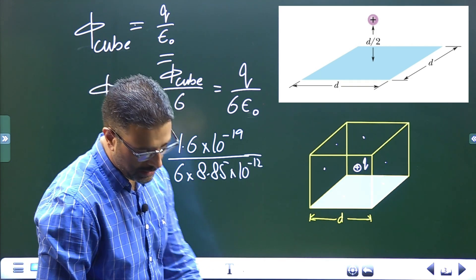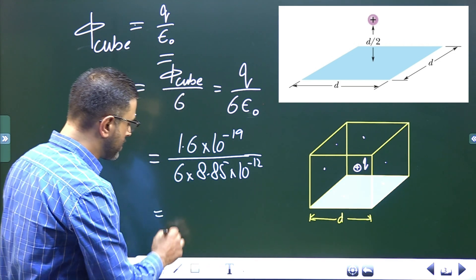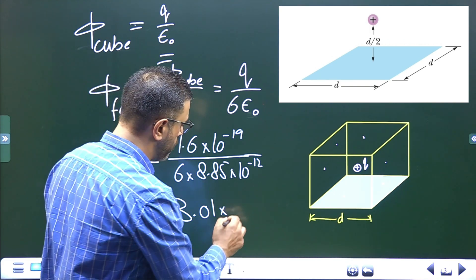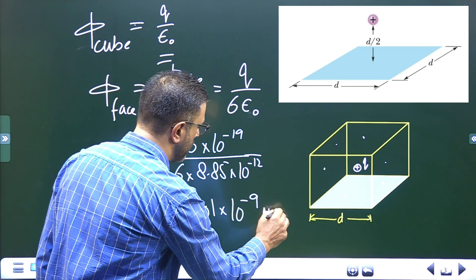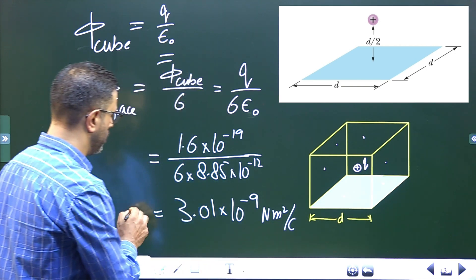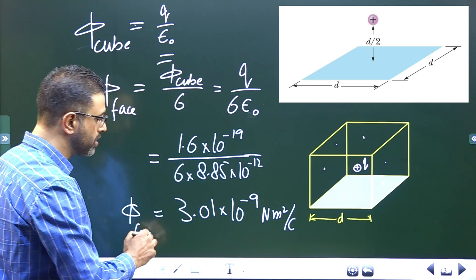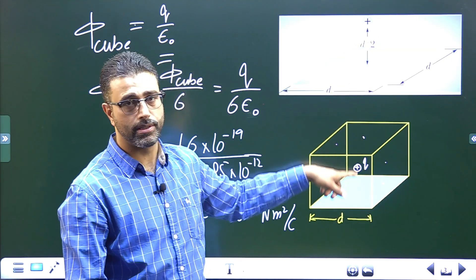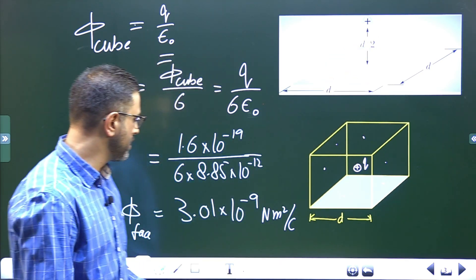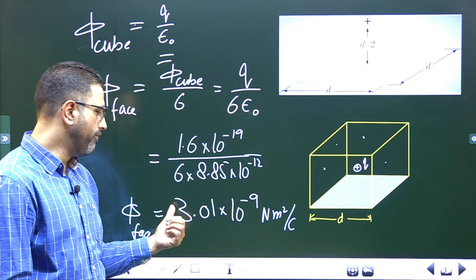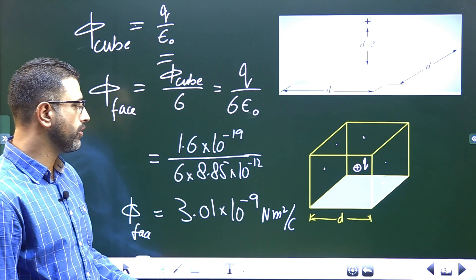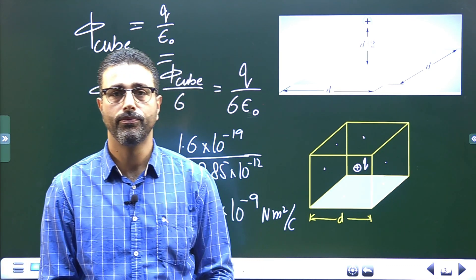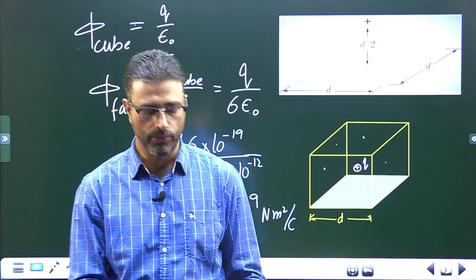This comes out to be 3.01 × 10⁻⁹ Newton meter squared per Coulomb. So this is the flux through each face, and the given surface is one of those faces. Therefore, flux through the given surface is Q divided by 6 epsilon zero, which equals 3.01 × 10⁻⁹ Newton meter squared per Coulomb. That will do for the session.